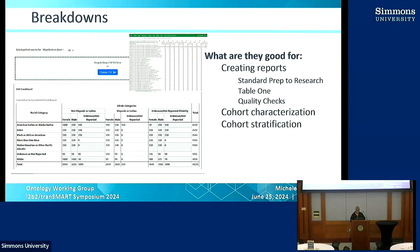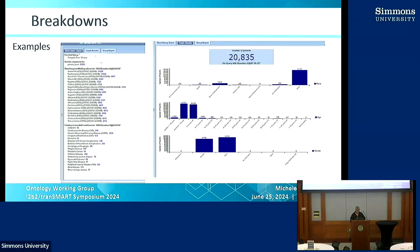In ENACT, we've created a Charlson score, top medications by ingredient, and top diagnoses rolled up to a three-digit ICD. These are examples of what they look like in the old i2b2, but this will allow us to create a lot of different types of reports for our users.